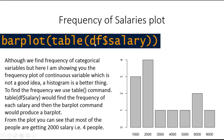So inside the table command use df$salary, and then enclose all of this in the barplot. This will draw a plot like this. Although we find frequency of categorical variables, here I'm showing you the frequency plot of a continuous variable, which is not a good idea — a histogram is a better thing for that purpose. To find the frequency we use the table command, which finds the frequency of each salary, and then barplot produces the bar plot.